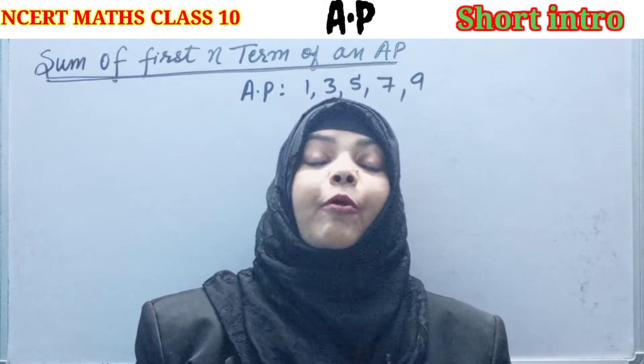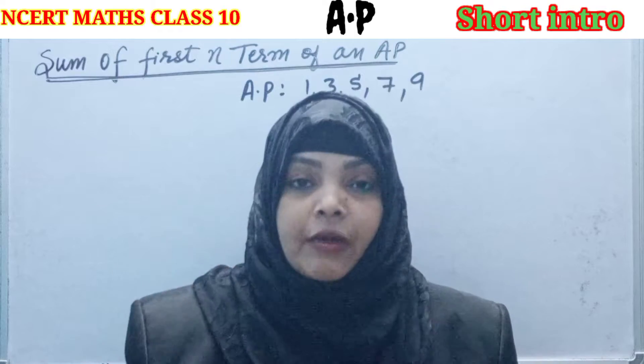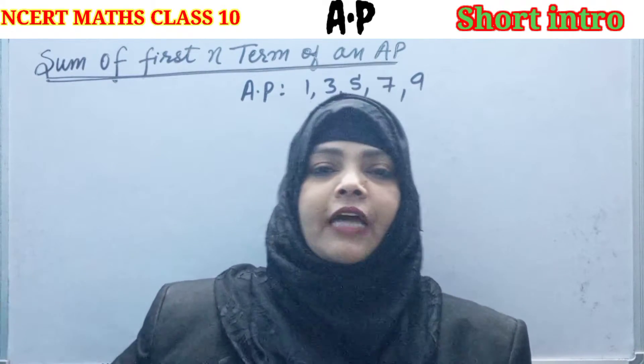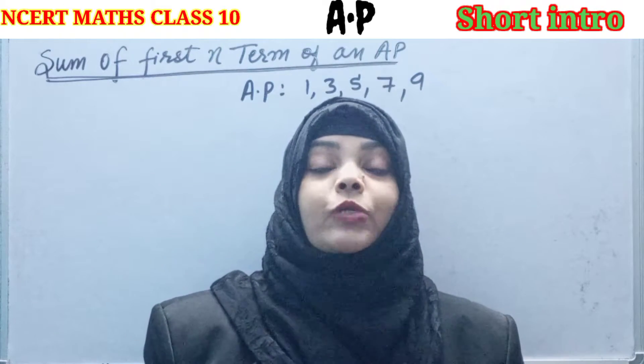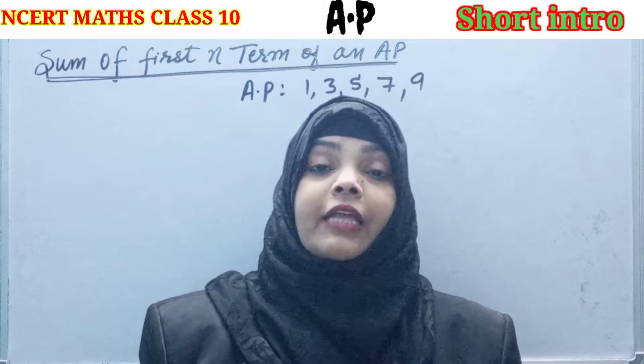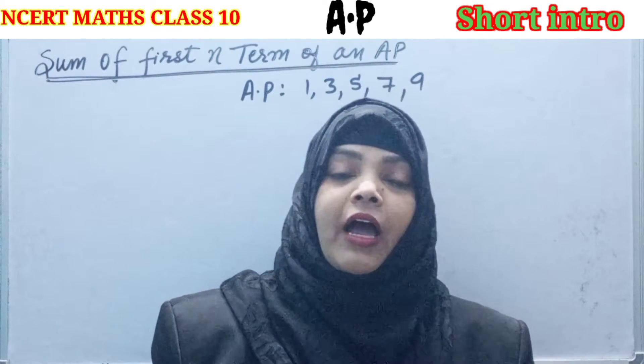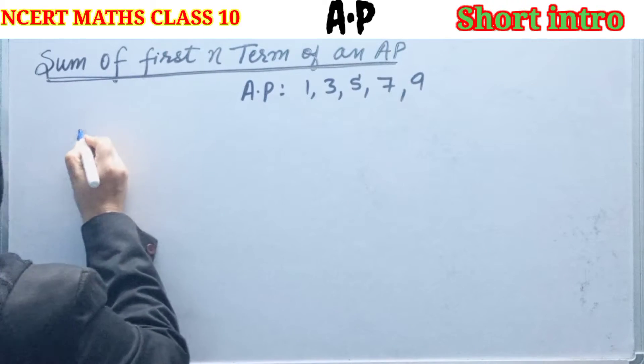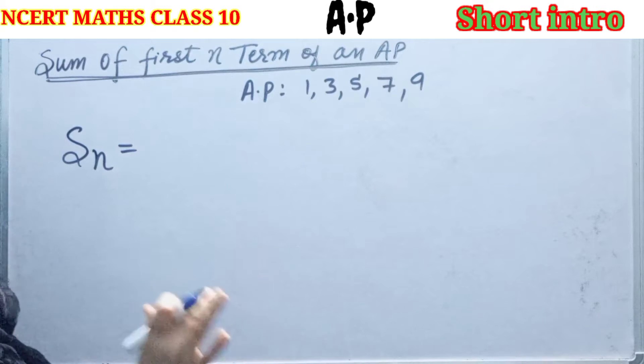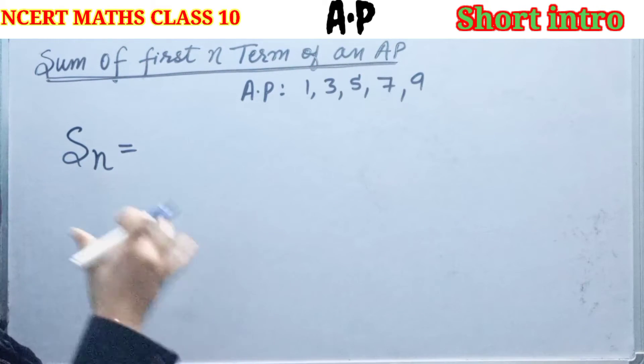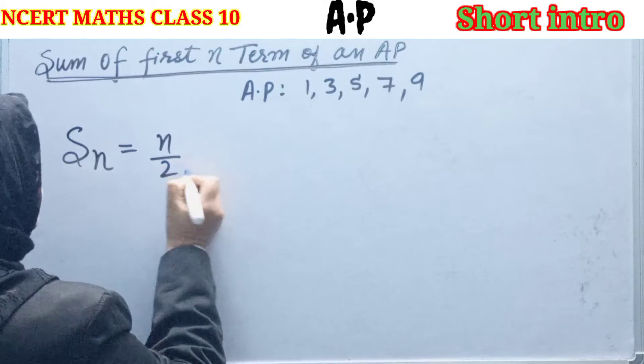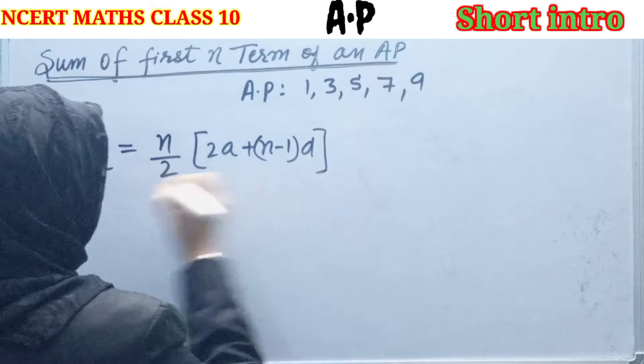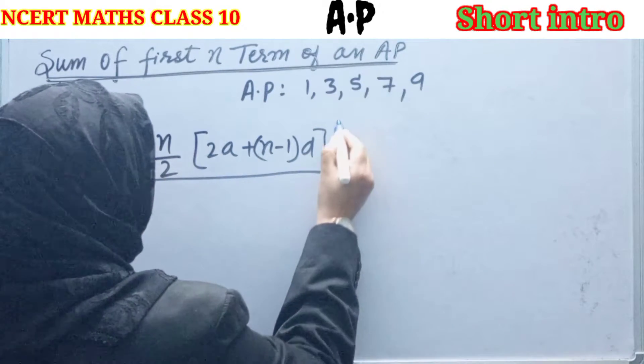But these are simple terms. If it is asking about 20 terms, 50 terms, or 44 terms, then that becomes very difficult. To find the sum of the given first N terms of an AP, we have a formula. That is SN equals to N by 2 into 2A plus N minus 1 into D.